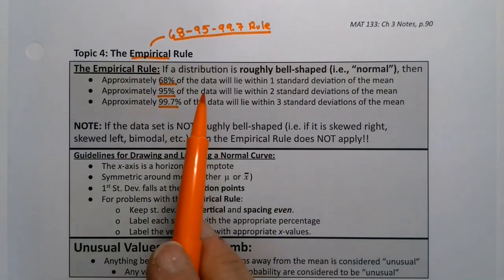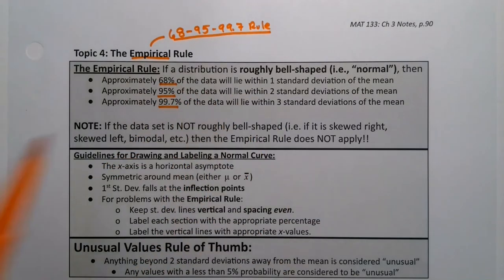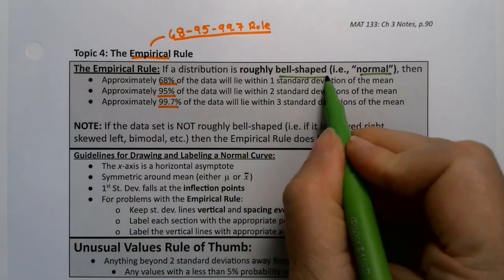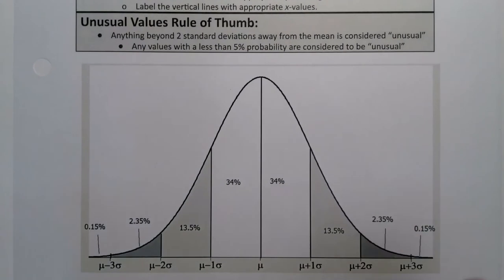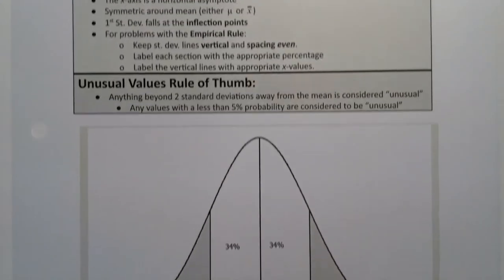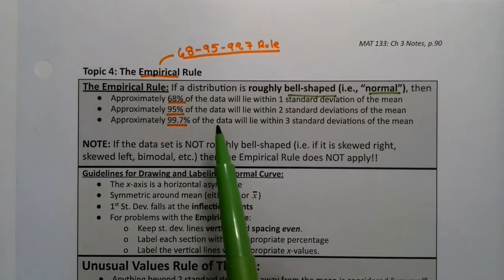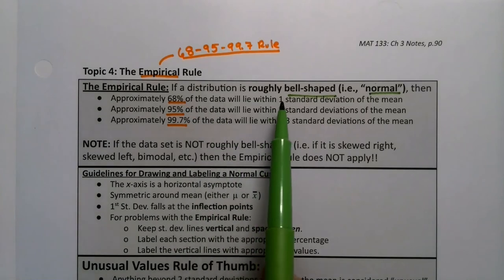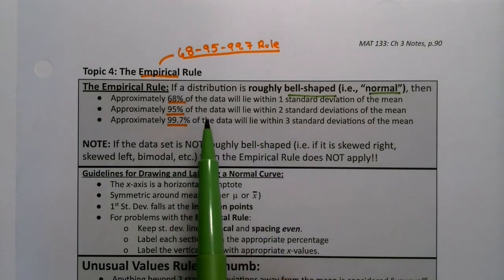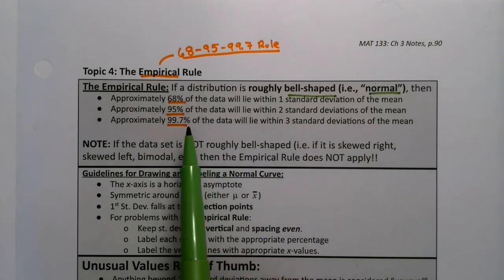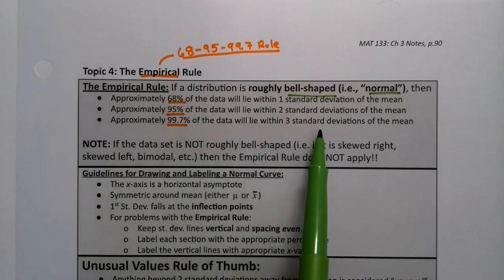So it's saying that if a distribution is roughly bell-shaped, which is another word for normal, it has the picture that you see down below. If it has that shape, then roughly 68% lie within one standard deviation, 95% lie within two standard deviations, and 99.7% of the data will lie within three standard deviations.